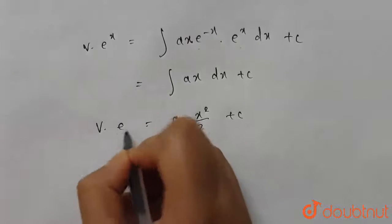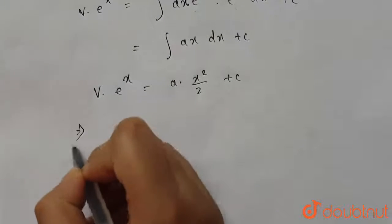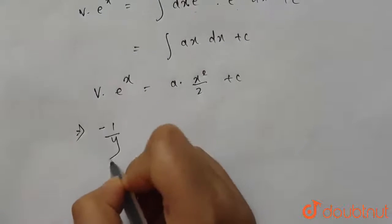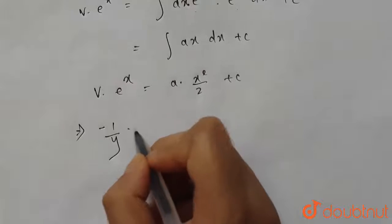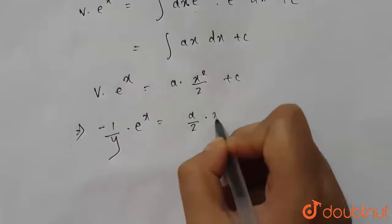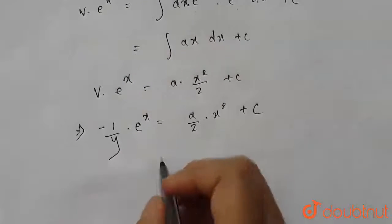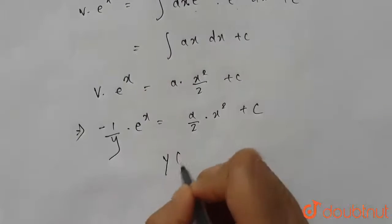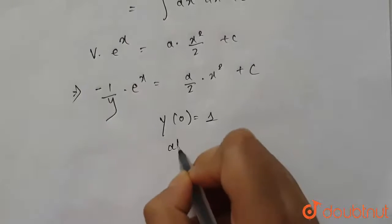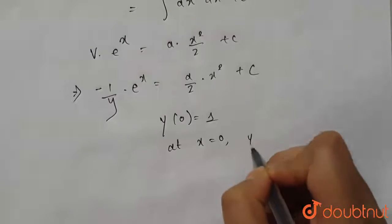So the general solution is v·eˣ = a·x²/2 + C. Since v = −1/y, we get (−1/y)·eˣ = a·x²/2 + C. Now we apply the initial condition y(0) = 1, meaning at x = 0, y = 1.